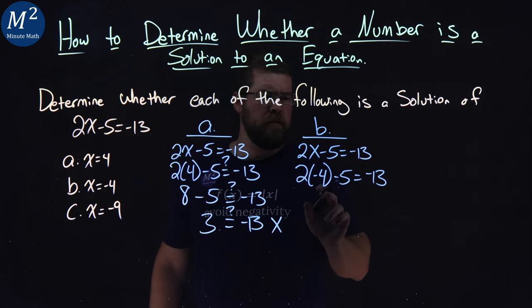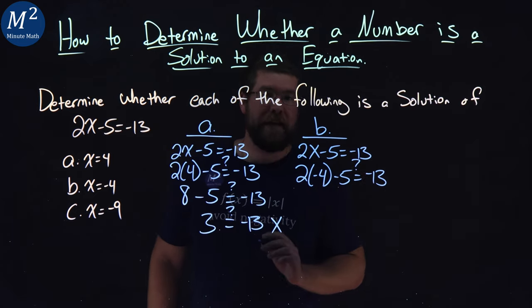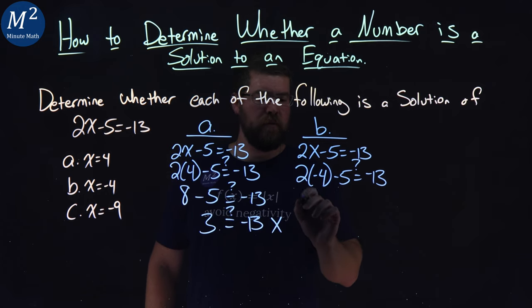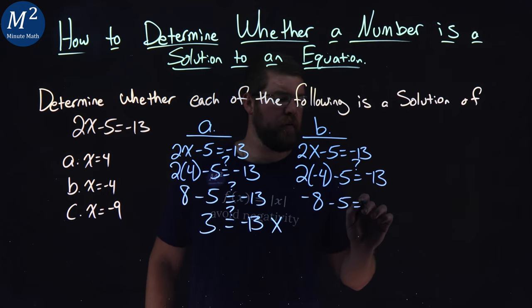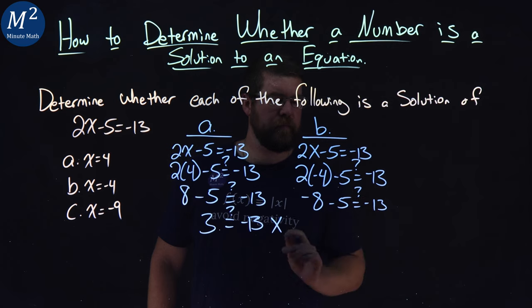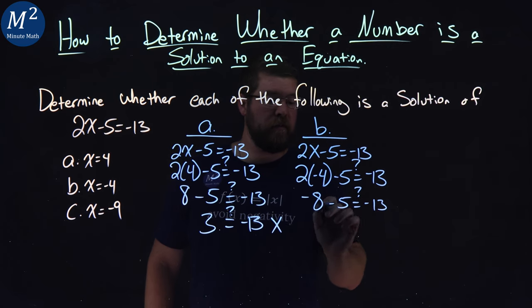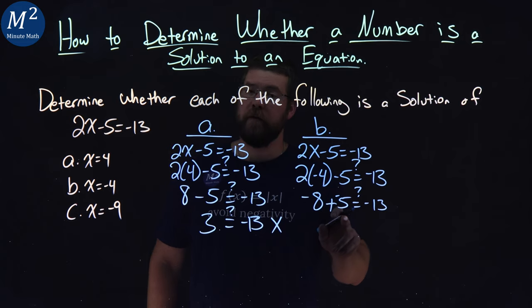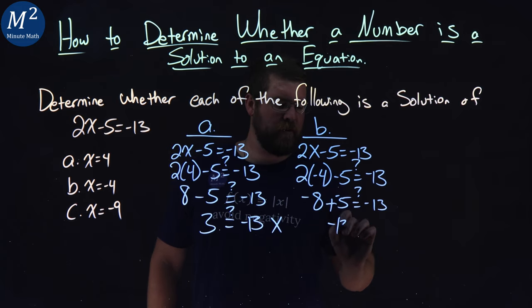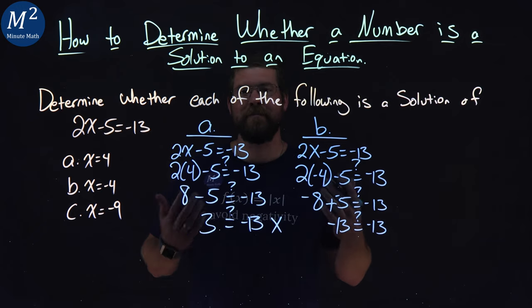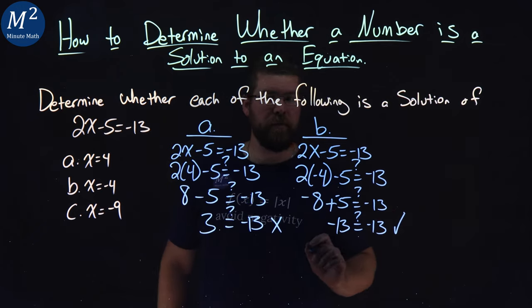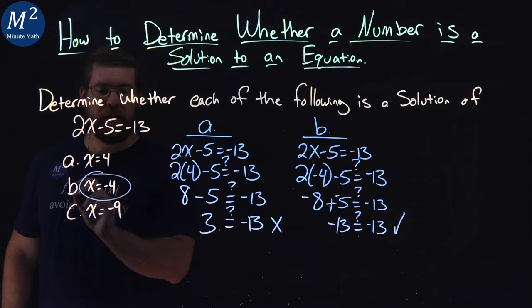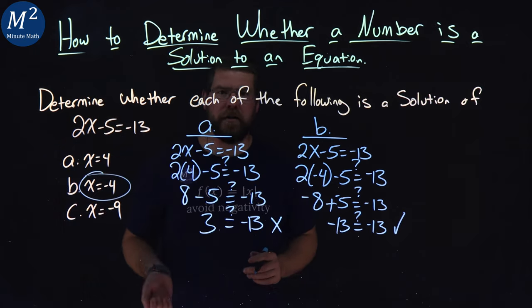From there, let's simplify left and right-hand side. 2 times negative 4, negative 8 minus 5 equals negative 13. Negative 8 minus 5 is the same thing as adding negative 5, and negative 8 plus negative 5 is negative 13. Are they the same? Yes, they are. We're good. And so x equals negative 4 is a solution for our equation.